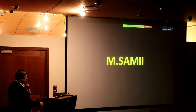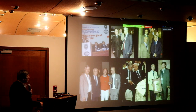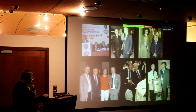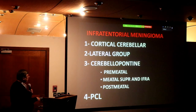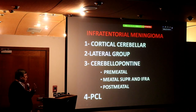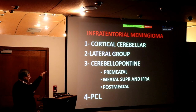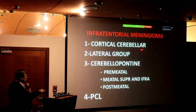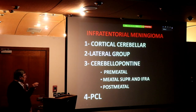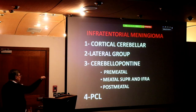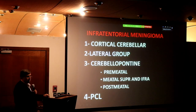Majid Samii from Hannover, Germany — I talk about him a lot because he's the man who gave us our knowledge about how to operate in that area. He said meningiomas of the posterior fossa are either on the cortex of the cerebellum, which has three surfaces: the occipital surface, the tentorial surface, and the petrous surface. Then there is the lateral petrous group, the cerebellopontine angle group, and then petroclival. There is a huge difference between petroclival and cerebellopontine angle group, which in many countries are all amalgamated — which is wrong.